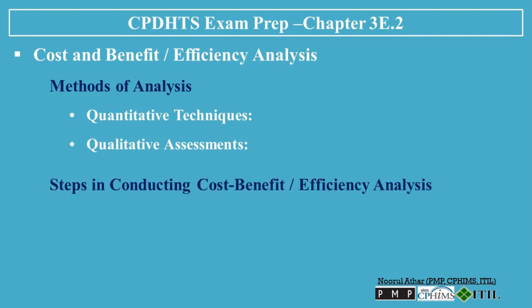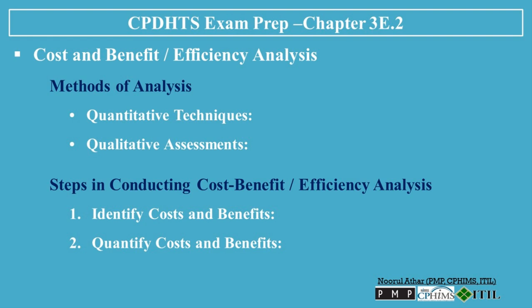Steps in conducting cost-benefit/efficiency analysis. 1. Identify costs and benefits: Listing all potential costs and benefits associated with the intervention. 2. Quantify costs and benefits: Assigning monetary values to each identified cost and benefit using available data. 3. Analyze: Comparing the total costs against the total benefits to determine net gain or loss. Techniques such as net present value (NPV), internal rate of return (IRR), or benefit-cost ratio (BCR) can be used.